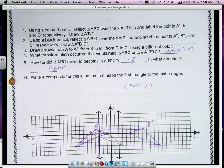Number 4 asks you what kind of transformation occurred. It is a translation. It was 10 units to the right, so we call that x plus 10 comma y.